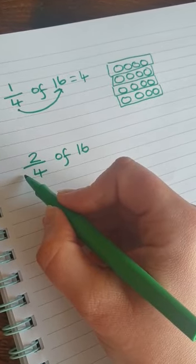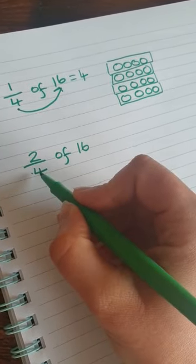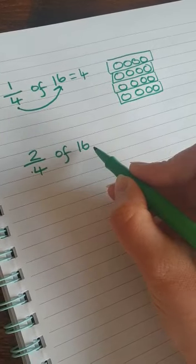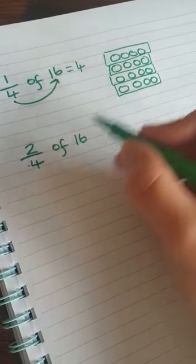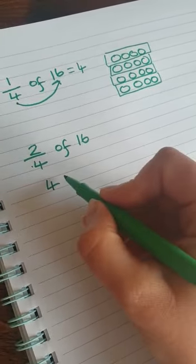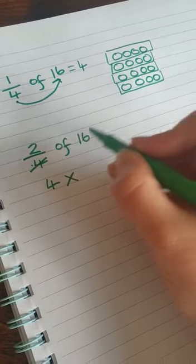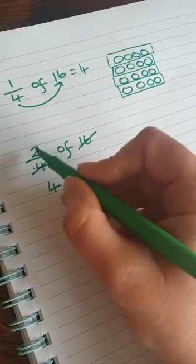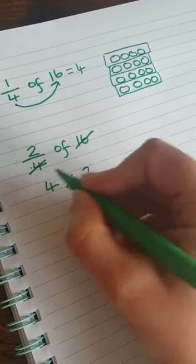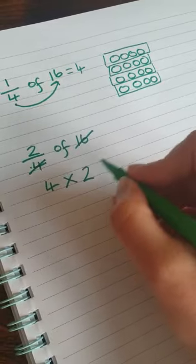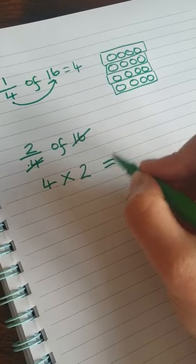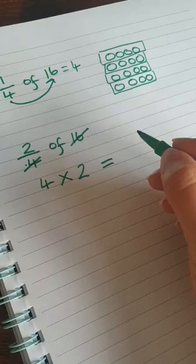OK. How many fours go into 16? Now, we know this is four already. But now we need to do a times. So we've done how many fours go into 16. Now we're left with the numerator two. And we times our first answer by two. So four times two. Anyone know what four add four is?